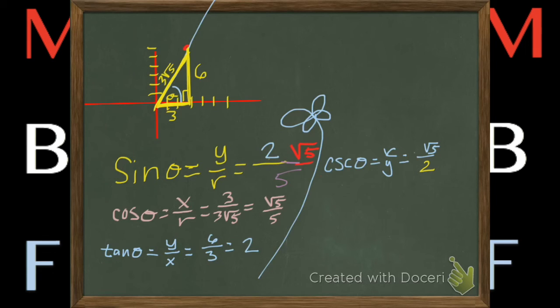And before we say bye-bye, let's go find the secant. The secant is r over x, which is three root five over three. We reduce. That's a one. Nobody writes it like that. It's root five.